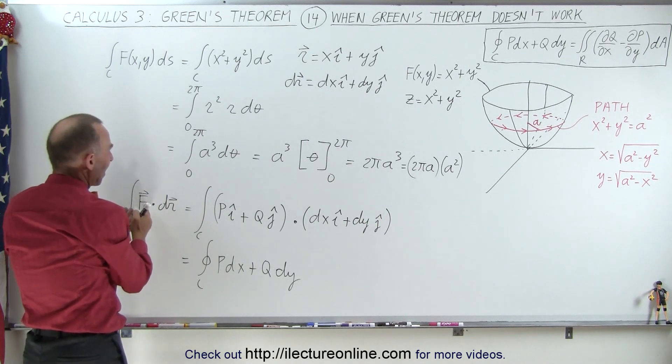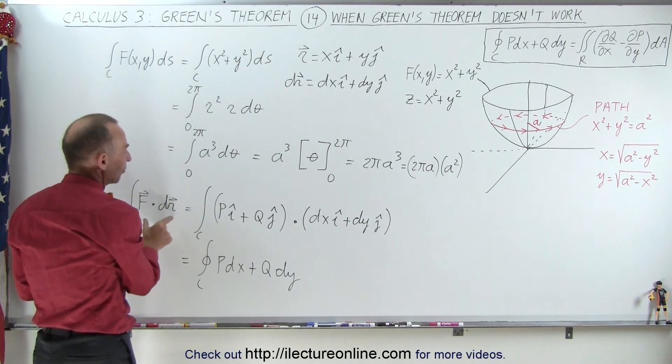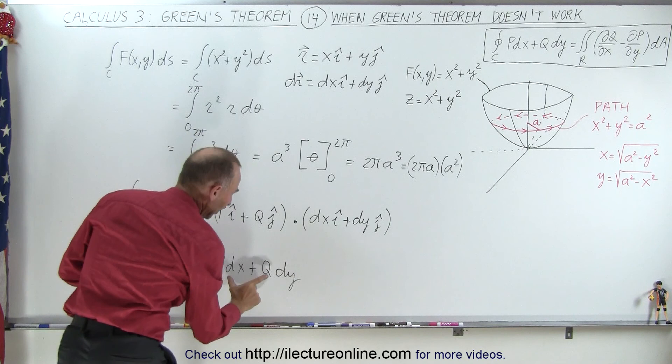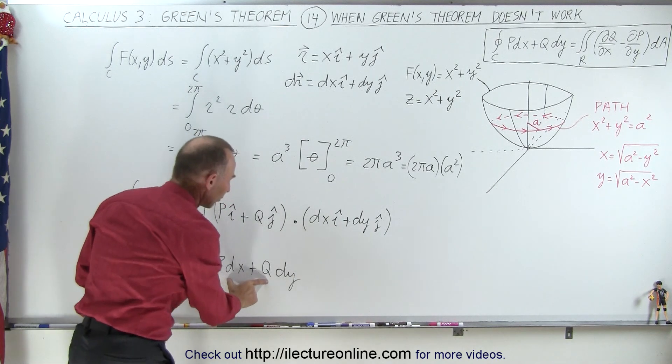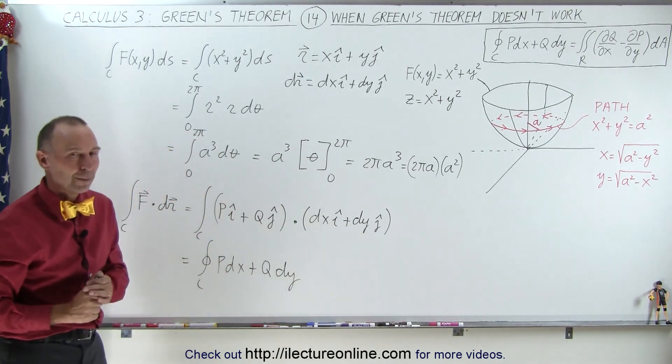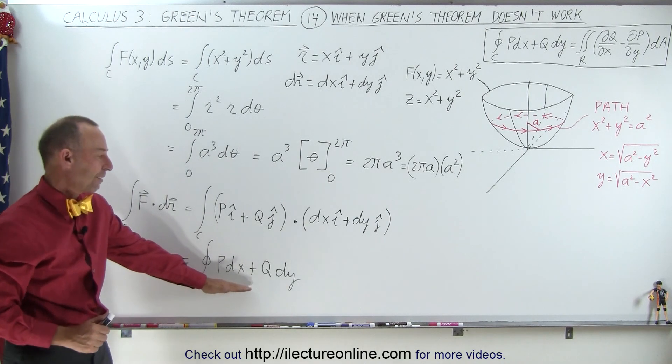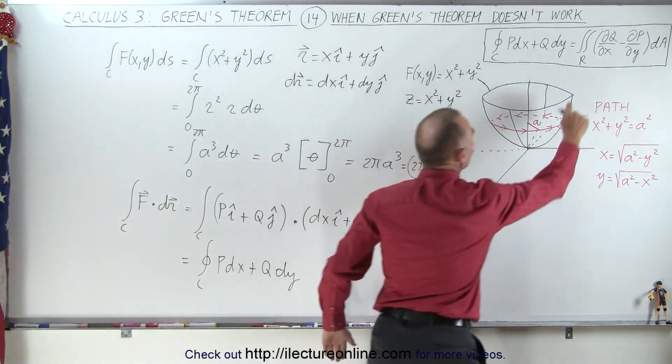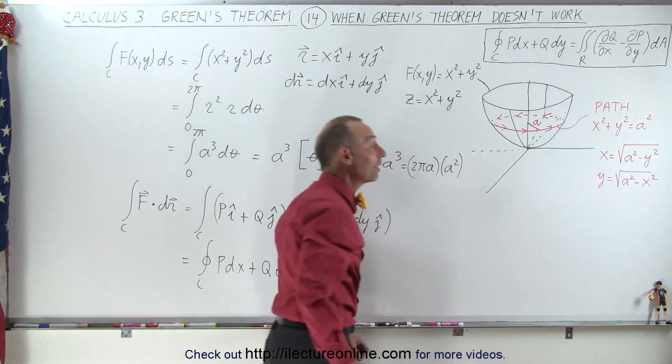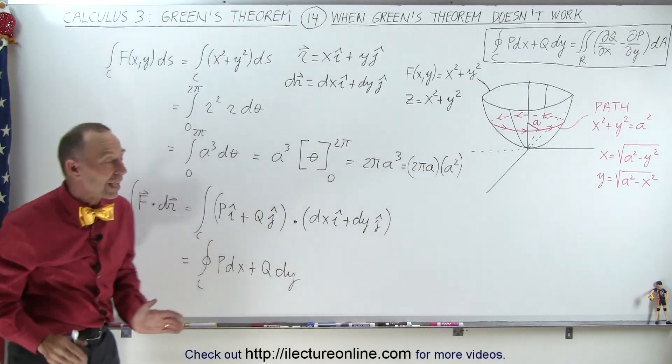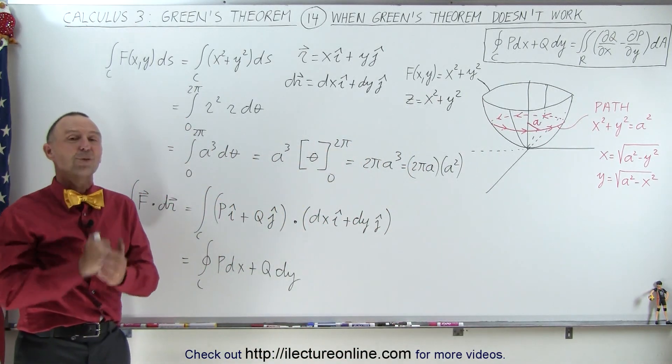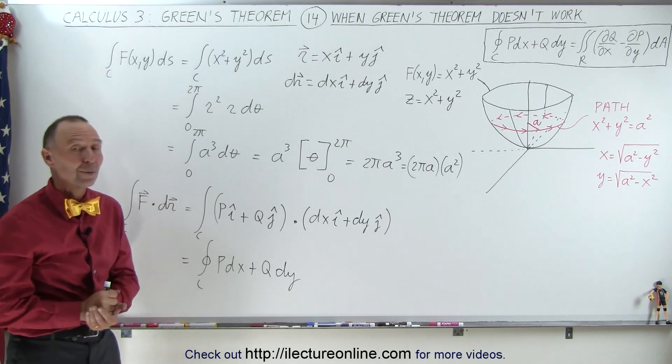Where you end up with the left side of the equation on Green's theorem in this particular format. So it's really important that this is what you have on the left side, so you can indeed equate it to this on the right side. Once you have that, then Green's theorem is the way to go. And that's how we know.